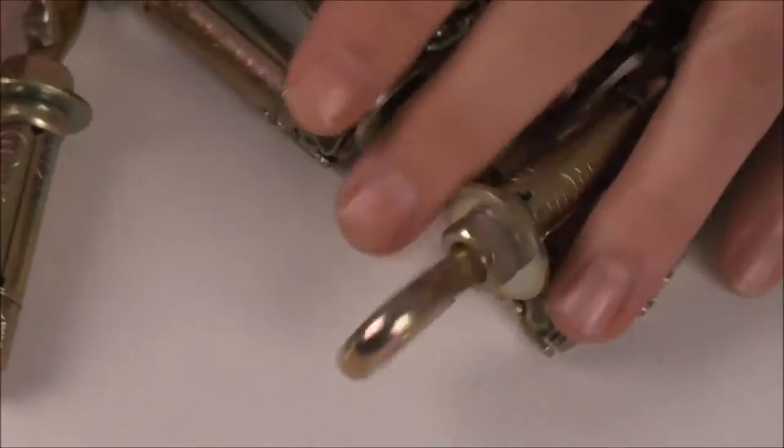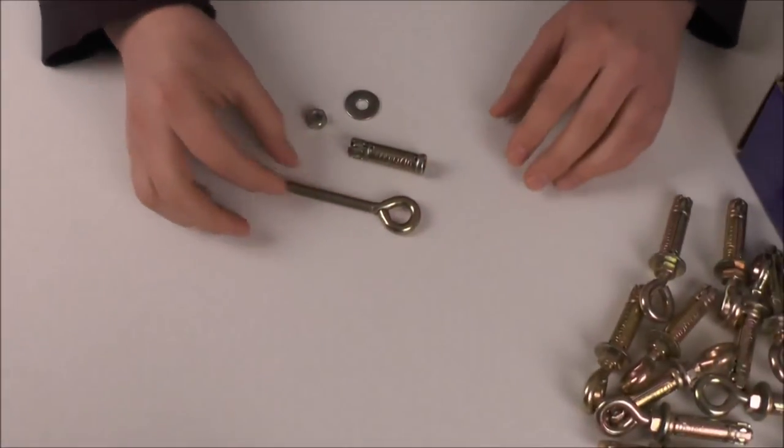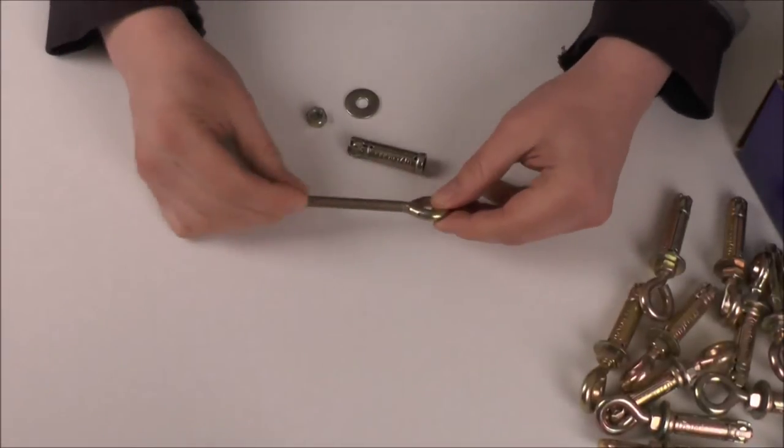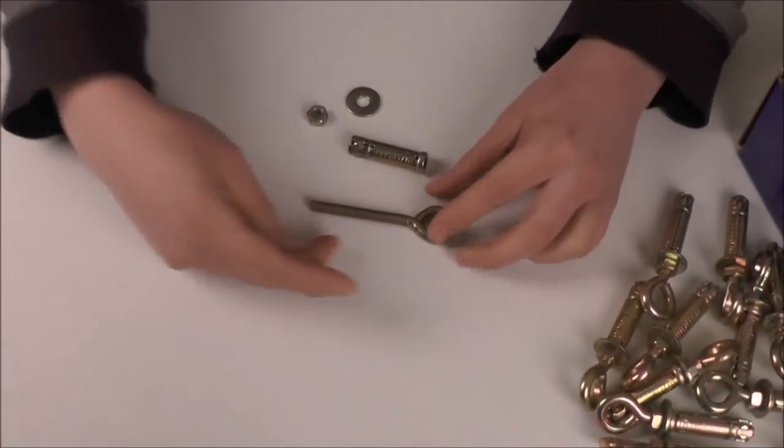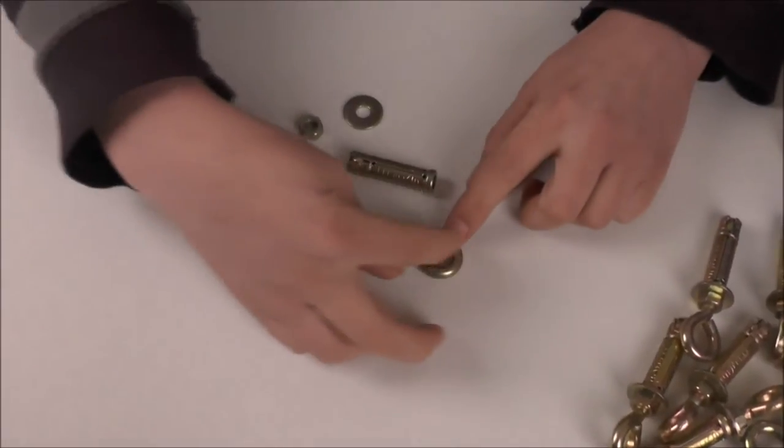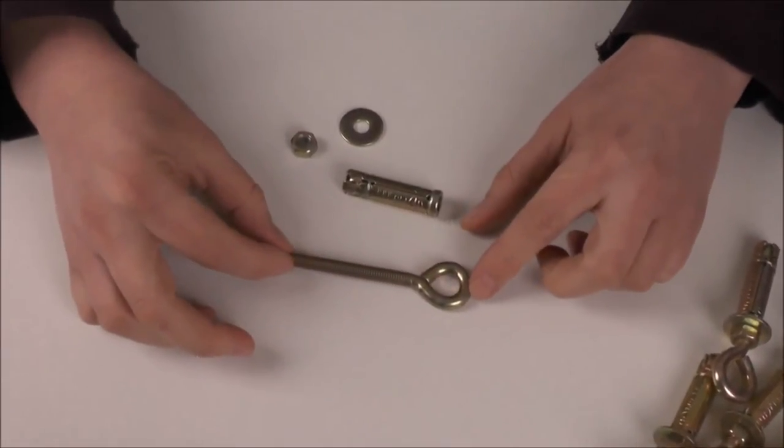So just to show you exactly what you do get. When you dismantle the eye bolt it comes down into 4 pieces. We have the actual threaded eye bolt itself. The thread length is 65mm. The overall length of the eye bolt is 95mm.